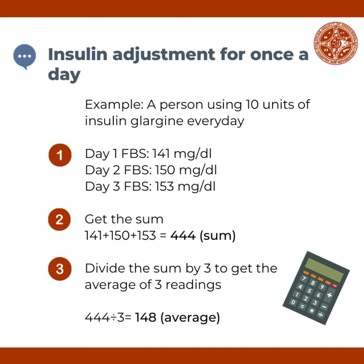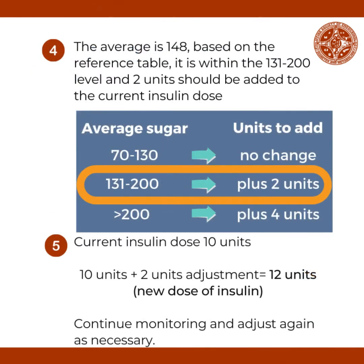Day 3 was 153 milligrams per deciliter. Adding days 1 to 3: 141 plus 150 plus 153 gives a sum of 444. Dividing 444 by 3 days, the average is 148 milligrams per deciliter. Based on the reference table, an average fasting blood sugar of 148 milligrams per deciliter falls within the 131 to 200 milligrams per deciliter range.